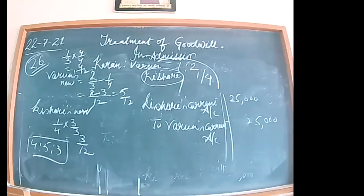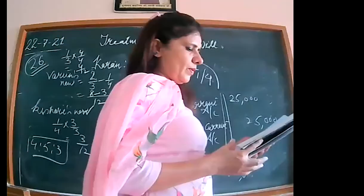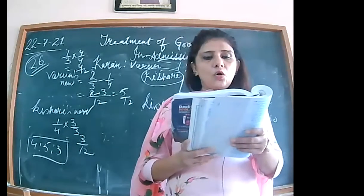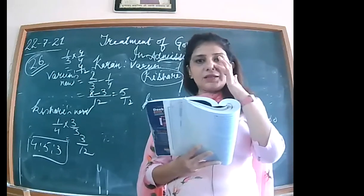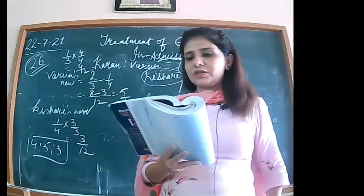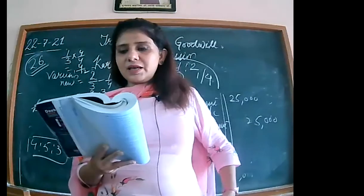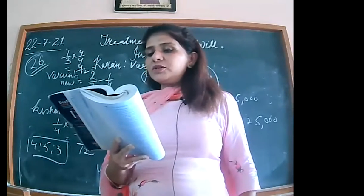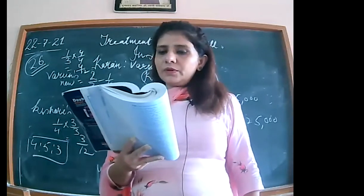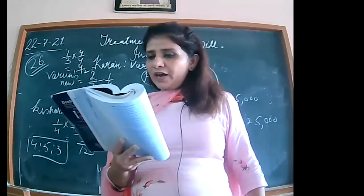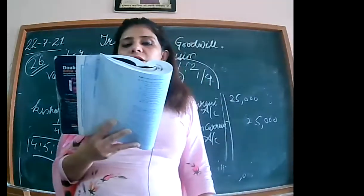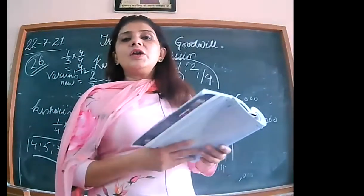Now moving to the back exercise — 19 questions for practice. Question 19: Gold and Silver are partners sharing profits in the ratio of 2 to 5. Copper has been admitted. He brings 14,000 for his share of goodwill to be distributed between Gold and Silver. Copper's share in future is 1/4. What will be the new profit sharing ratio and what amount of goodwill brought in by Copper will be received by Gold and Silver?